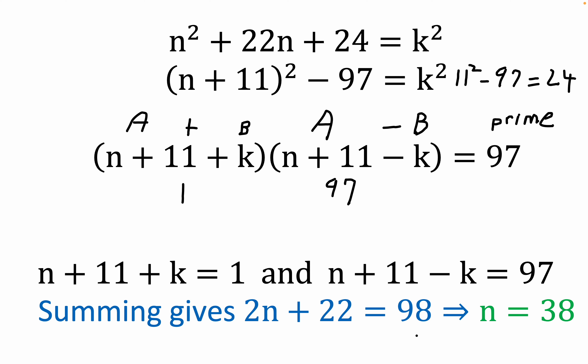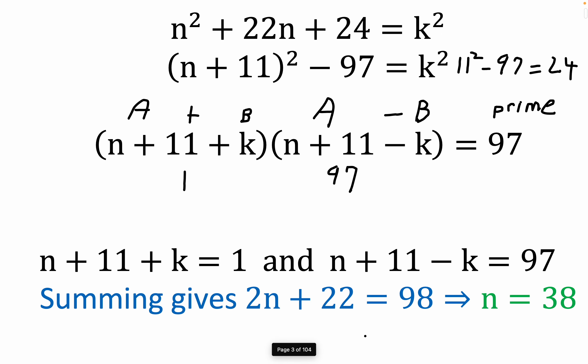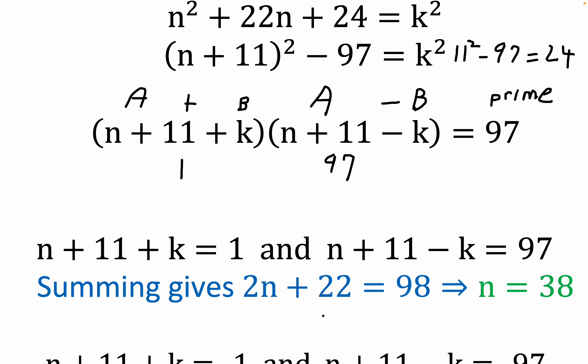Notice that if you sum these two guys, you get this fairly simple circumstance. The K eliminates. That's the motivation behind summing. Notice if you sum, this K is going to eliminate this negative K. So you get 2n plus 22 equals 98. That would be the same thing as saying 2n equals 76.